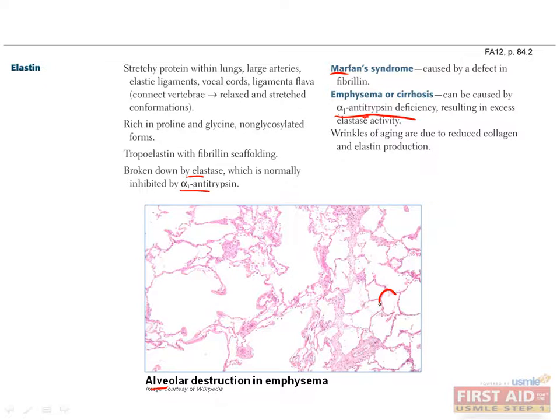In this image, you can see normal alveoli on the right side and damaged alveoli on the left side, which is what emphysema looks like. A common treatment of alpha-1 antitrypsin deficiency is intravenous infusion of alpha-1 antitrypsin. And interestingly, this also helps patients who have emphysema caused by smoking.